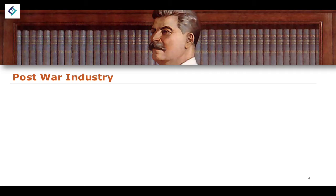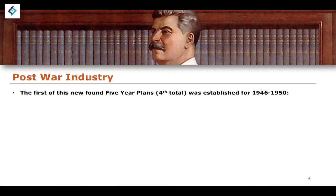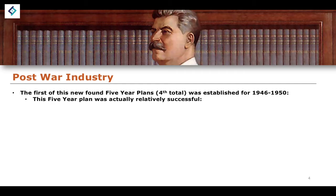In terms of industrial developments, the five-year plans would be the main driving factors of this new industry. The first post-war five-year plan was the fourth five-year plan in total, given that the five-year plans started when Stalin took power. This first post-war plan was established from 1946 and was set to last until 1950.